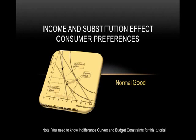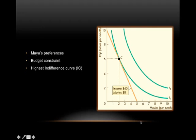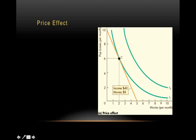Hello everyone. Today we'll discuss income and substitution effects, focusing on normal goods as well as inferior goods. Let's assume these are Maya's preferences and here is her budget constraint. Now let's suppose there's a price fall and the price of movies falls to four dollars.